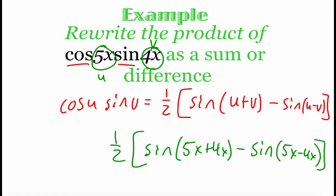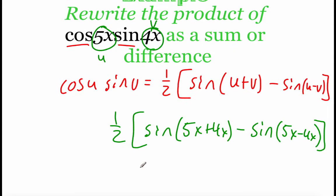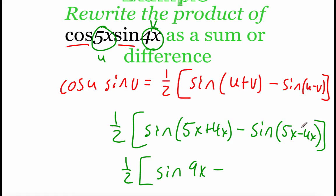We can simplify those things inside the parentheses. 5x plus 4x is 9x, so we've got sine of 9x. And 5x minus 4x is just x, so we get sine of x. That gives us 1/2 times (sine of 9x minus sine of x), and we're going to leave that as our final answer.